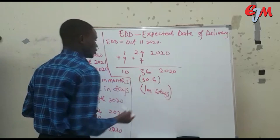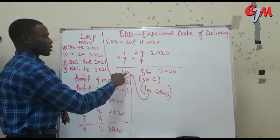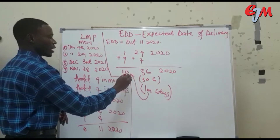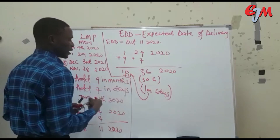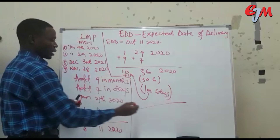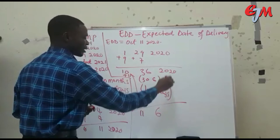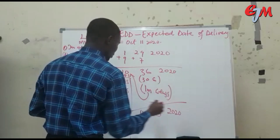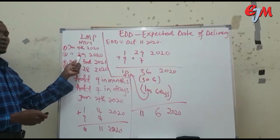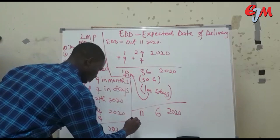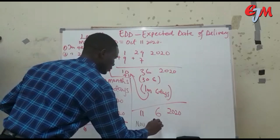So, take that 1 extra month and add it to the month column: 10 plus 1 gives you 11, which is November. Bring down the 6 days and the year 2020. So this person is expected to deliver on November 6th, 2020.